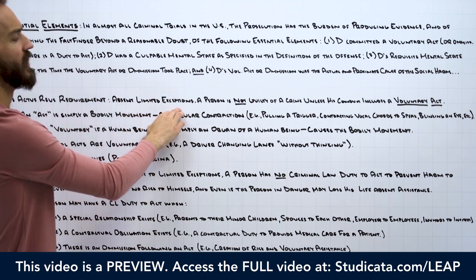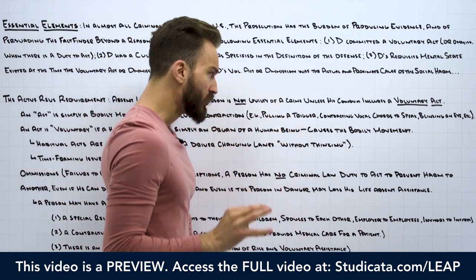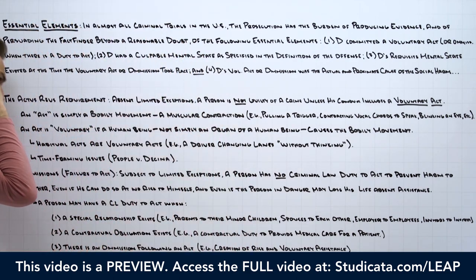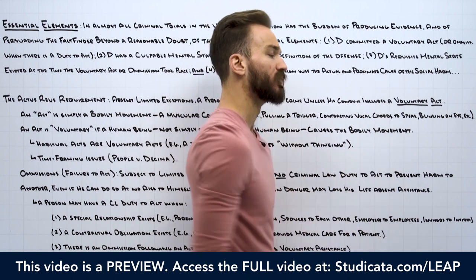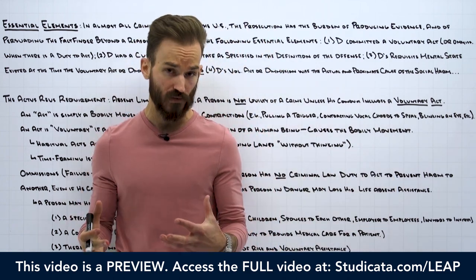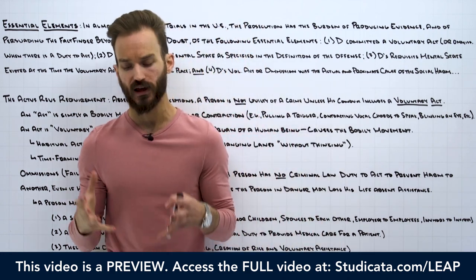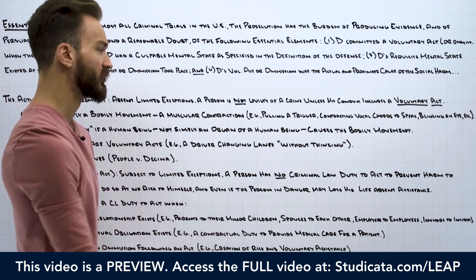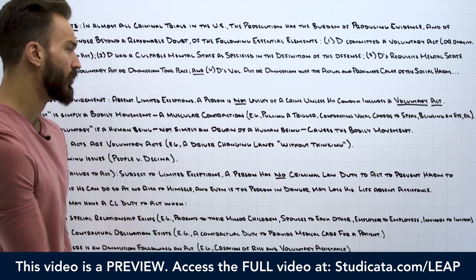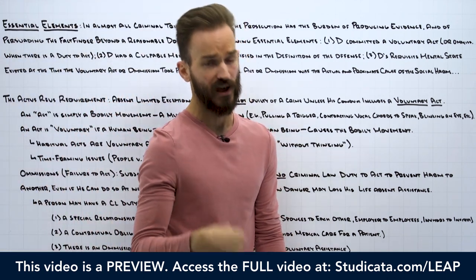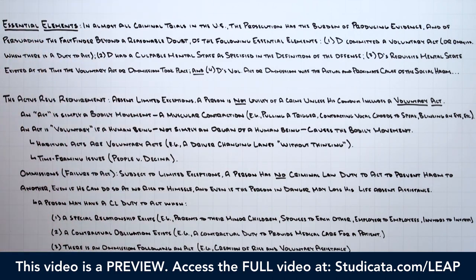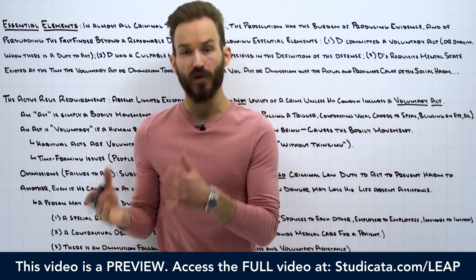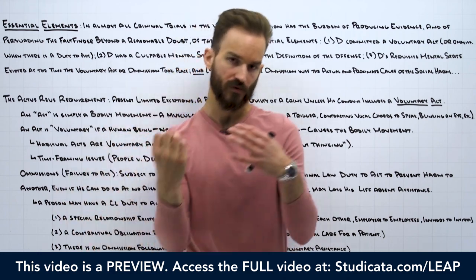Absent limited exceptions, a person is not guilty of a crime unless his conduct includes a voluntary act. So we have to break down what a voluntary act is, because essentially actus reus comes down to the defendant committing a voluntary act. And the idea here is why we require a voluntary physical act: we don't want to criminalize people's thoughts or fantasies.